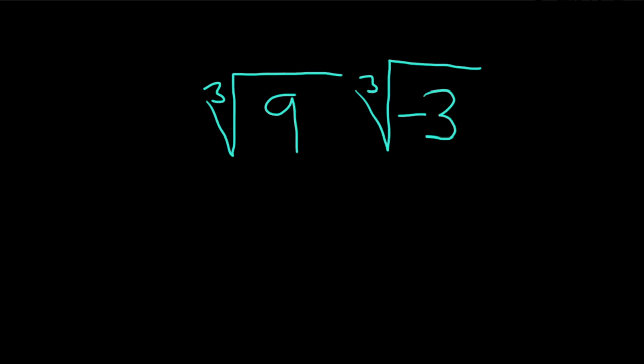Hi, in this problem we are going to multiply these radicals. We have the cube root of 9 times the cube root of negative 3.